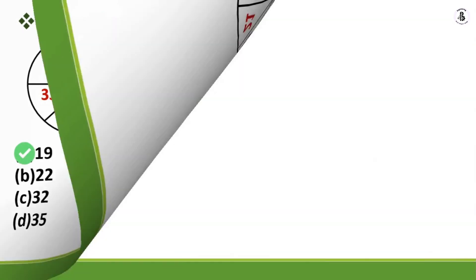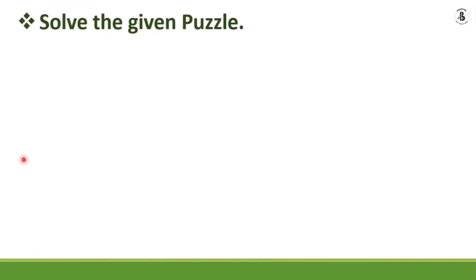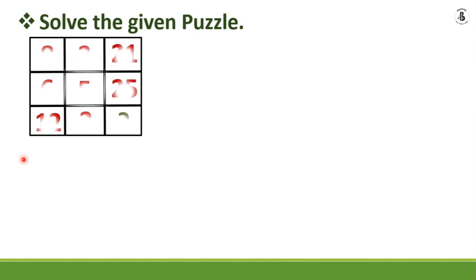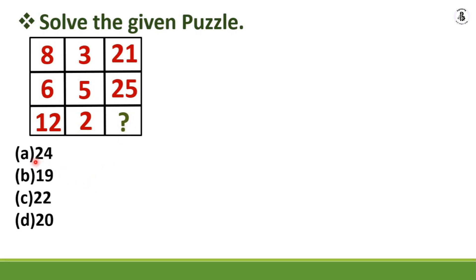For the next puzzle, solve the given rectangle. The values given are 8, 3, 21, 6, 5, 25, 12, and 2. You need to find the missing number to complete the puzzle. The options are: A) 24, B) 19, C) 22, D) 20. Your time starts now.